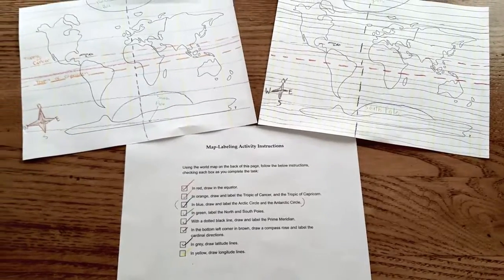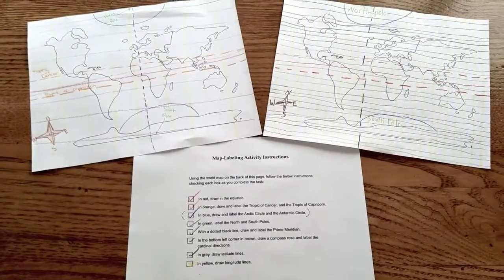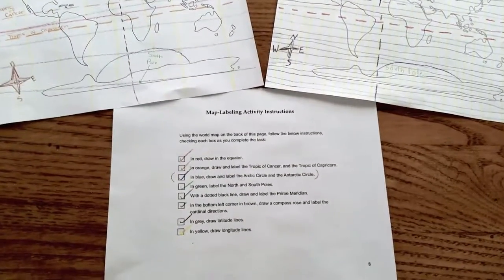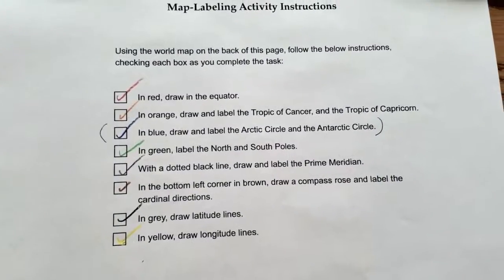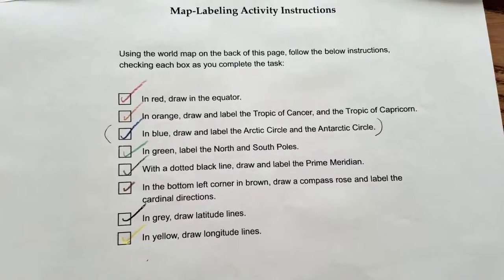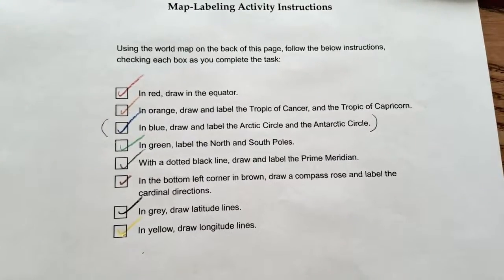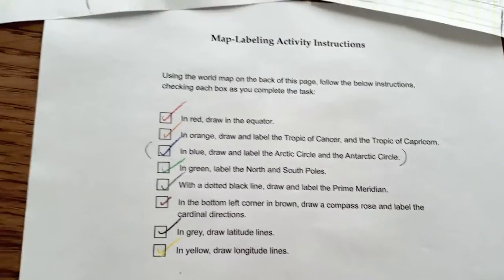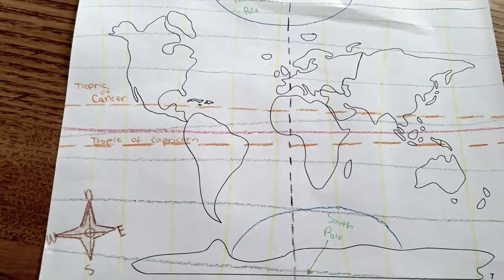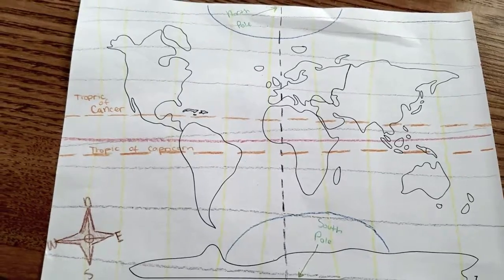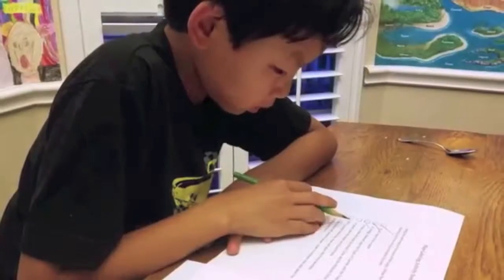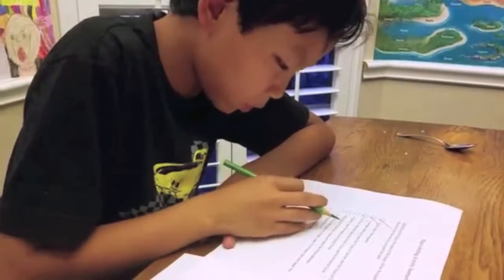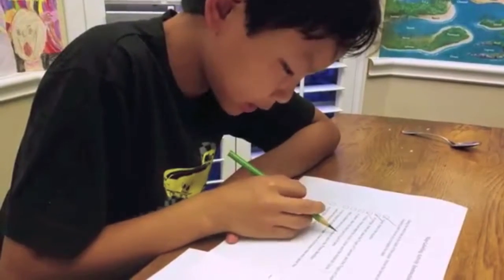The next activity is the map labeling activity. Students get the instructions they need to follow. For example, in red draw the equator, in orange draw and label the Tropic of Cancer and the Tropic of Capricorn. They get a blank world map and they have to follow the instructions, labeling and drawing the colored lines in the appropriate places. In green, label the north and south poles.